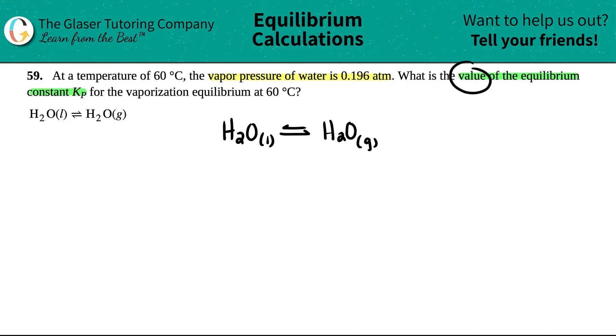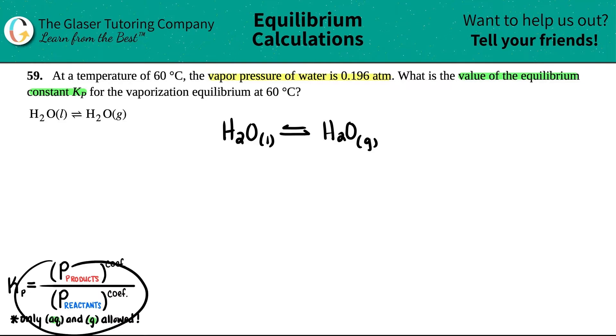Now they're asking for an actual number value for the equilibrium constant, Kp. And the Kp formula is a generalized formula, which is this one. Now Kp, remember, is just the pressure of the products divided by the pressure of the reactants. And for both of them, you just have to raise it to its coefficients. But we just got to play by the rules. If we're using Kp, only aqueous and gases are allowed in this formula.